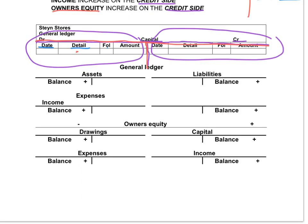Assets increase on the debit side and the balance is always on the debit side. Liabilities increase on the credit side and the balance is always on the credit side. Expenses increase on the debit side and the balance is on the debit side. Income will increase on the credit side and the balance is on the credit side. Owner's equity is the interest of the owner in the business, which will increase on the credit side and decrease on the debit side.